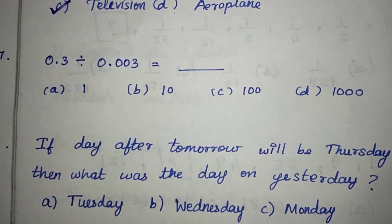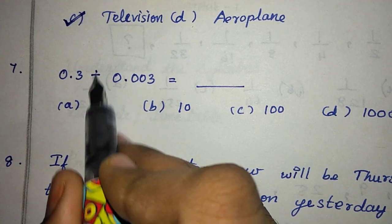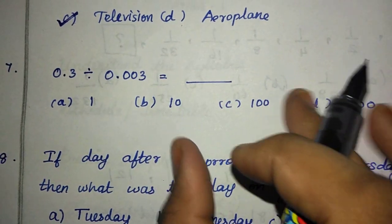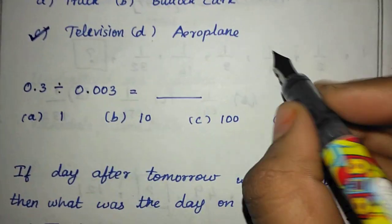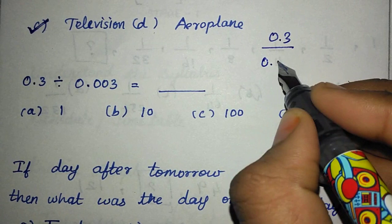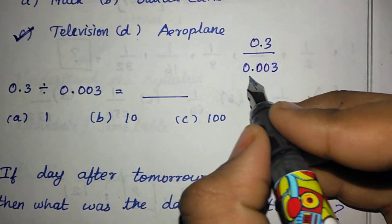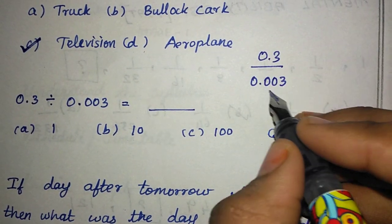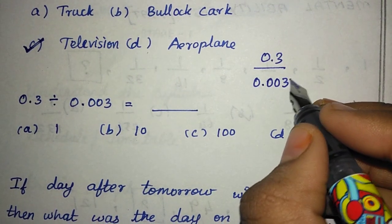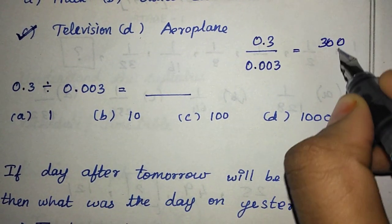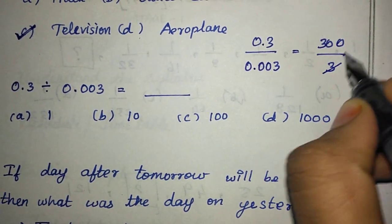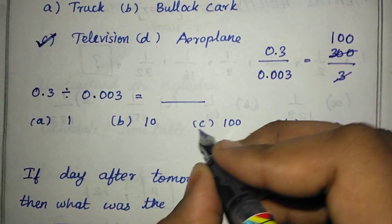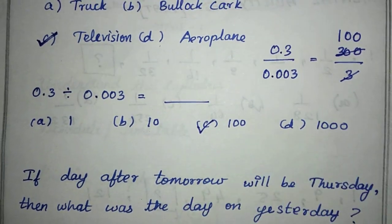Next is 0.3 divided by 0.003. This is 0.3 divided by 0.003. We see that it is 300. This is 3.00 and cancel. This is 3.00 and balance 200. This is 100. We see that option C, 100 is the right answer.